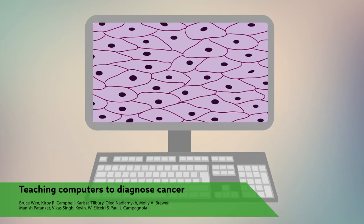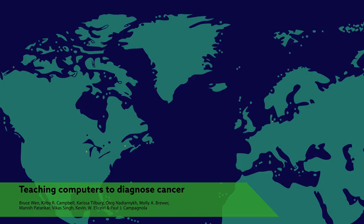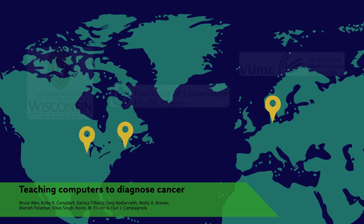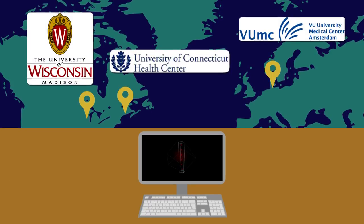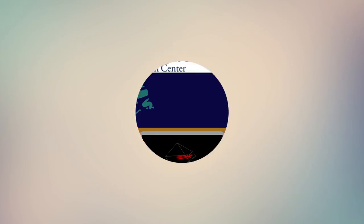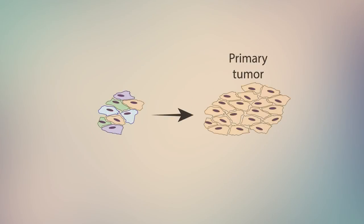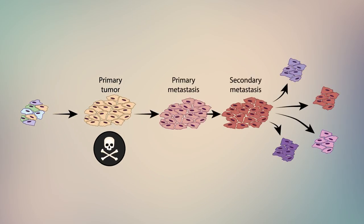Can computers learn to diagnose cancer? An international team of scientists has created a method that teaches computers to spot patterns in images of ovarian tumors through a process called texture analysis. With this computer vision, doctors can tell a lot about how fatal a tumor is and how the cancer will progress.